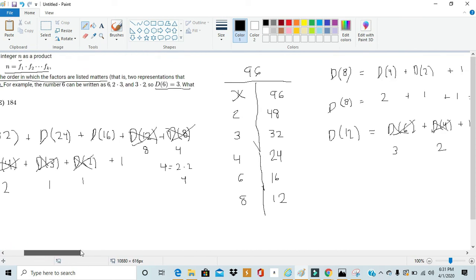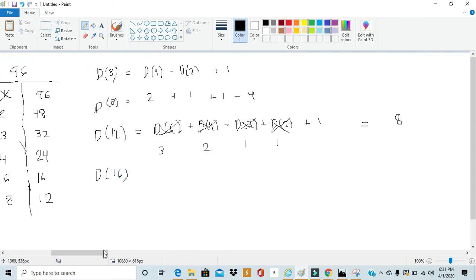Next value you need to find is d(16). Just rinse and repeat what we've been doing. It's equal to d(8) plus d(4) plus d(2) plus the 1, which is just 16. d(8) we've established to be 4, d(4) we've established to be 2, and d(2), well, as I said several times, 2 is prime, so the only way to write it is just 1. So we get 4 plus 2 plus 1 plus 1, which gives us d(16) to be 8.